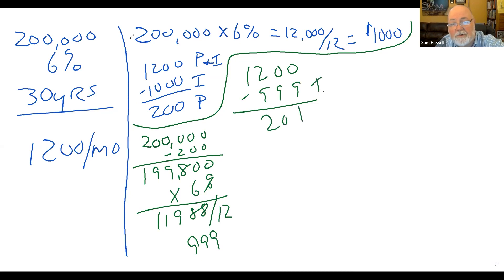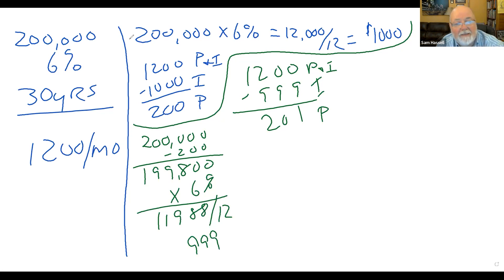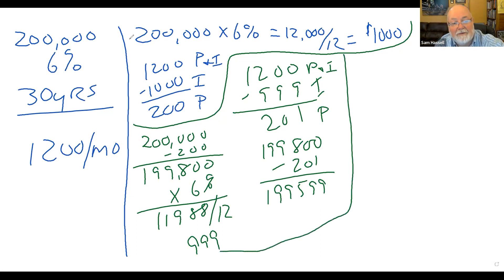This is interest, this is principal, this is principal and interest. So after month two, you notice something: I paid less in interest — yes, it's only $1 — but I paid more in principal, and I still made the same payment. So after month two, $199,800 minus $201 means I owe $199,599.